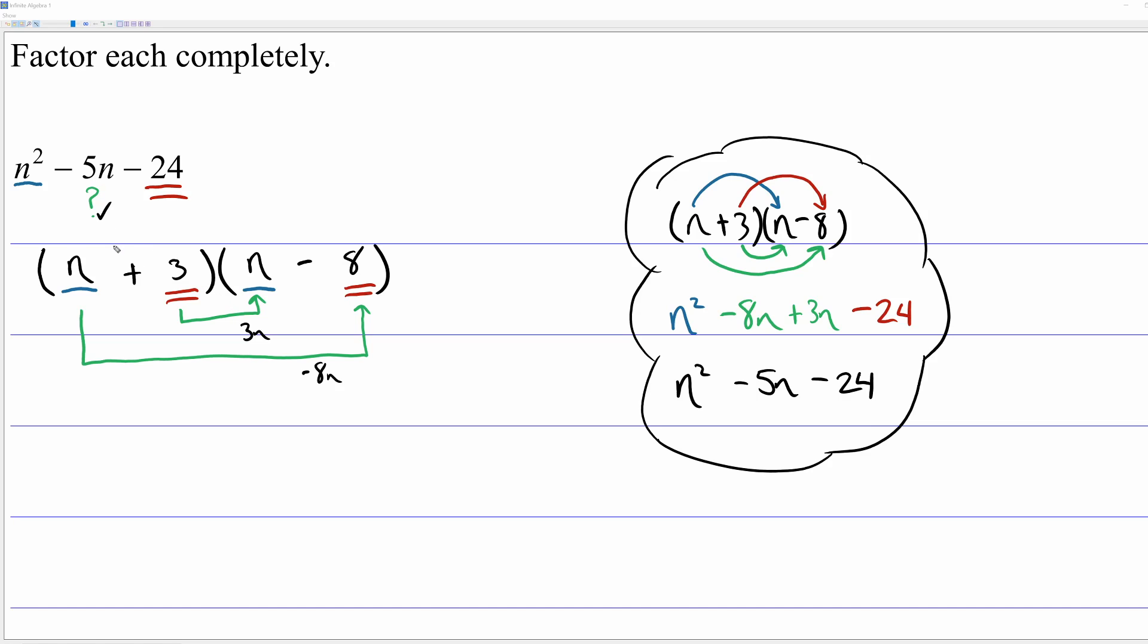So you literally, by trial and error, doing a little bit of mental math, you test to see that the blue blanks do what you want, the red blanks do what you want. But it's juggling the outside and the inside terms to get the correct middle term. That's the problem with factoring. So let's do another example of this.